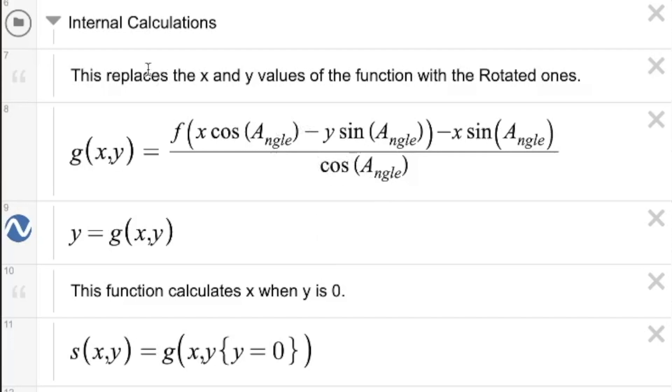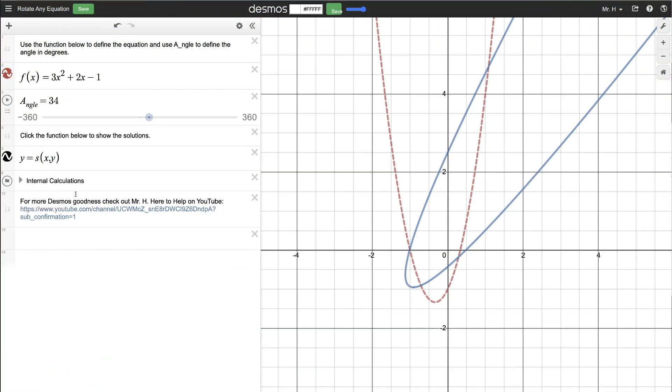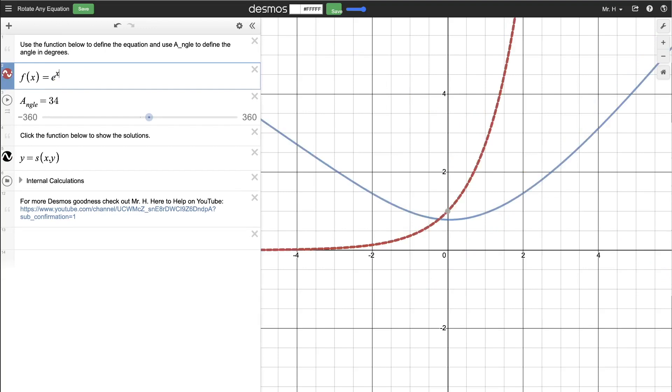But the cool thing is that this file in Desmos will do the internal calculations for you. And you can put in any function up here that you would like. So let me show you what I mean. If I change this to e to the x, notice that now I have my original function, and I can do the rotation of that function. And I can do this with any function that I want.